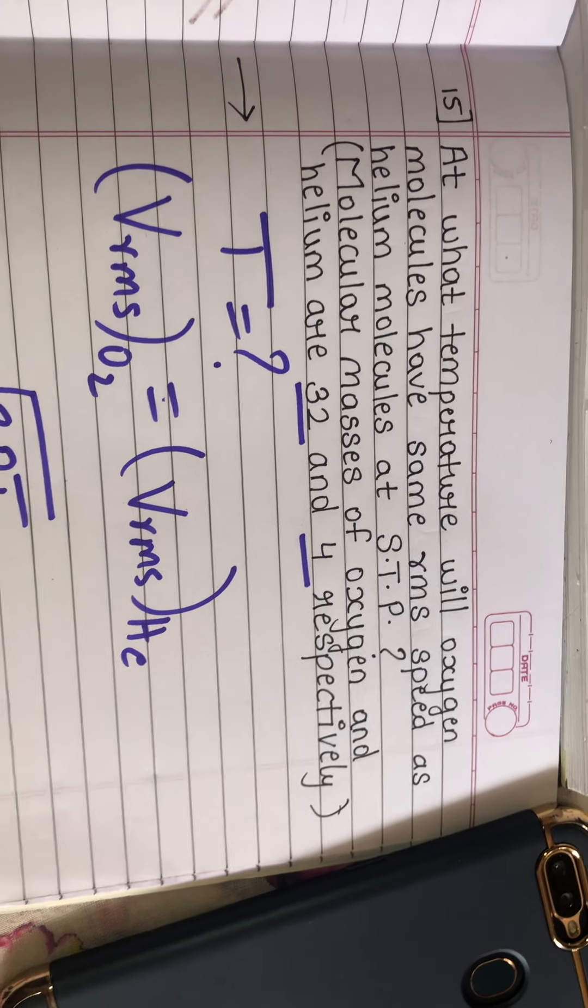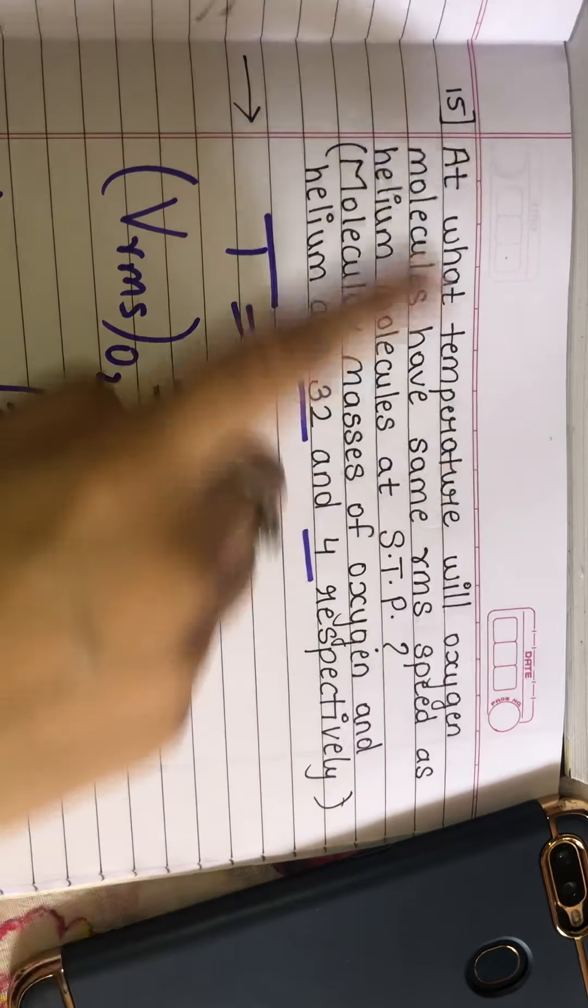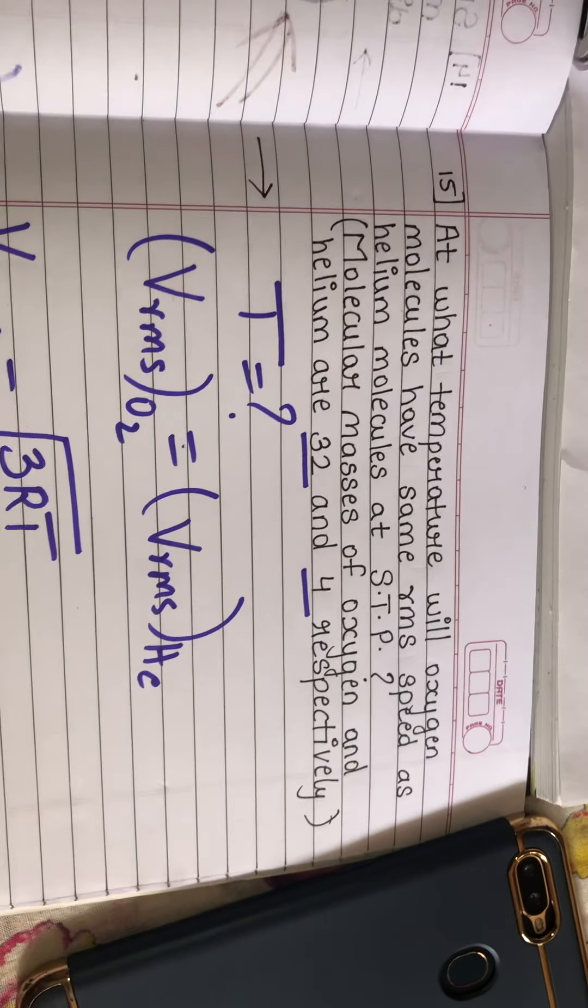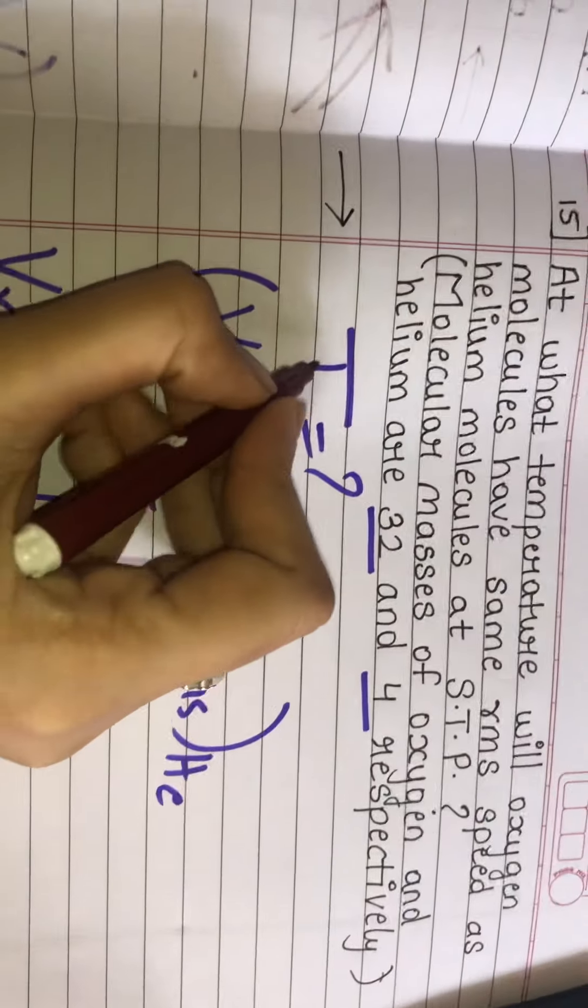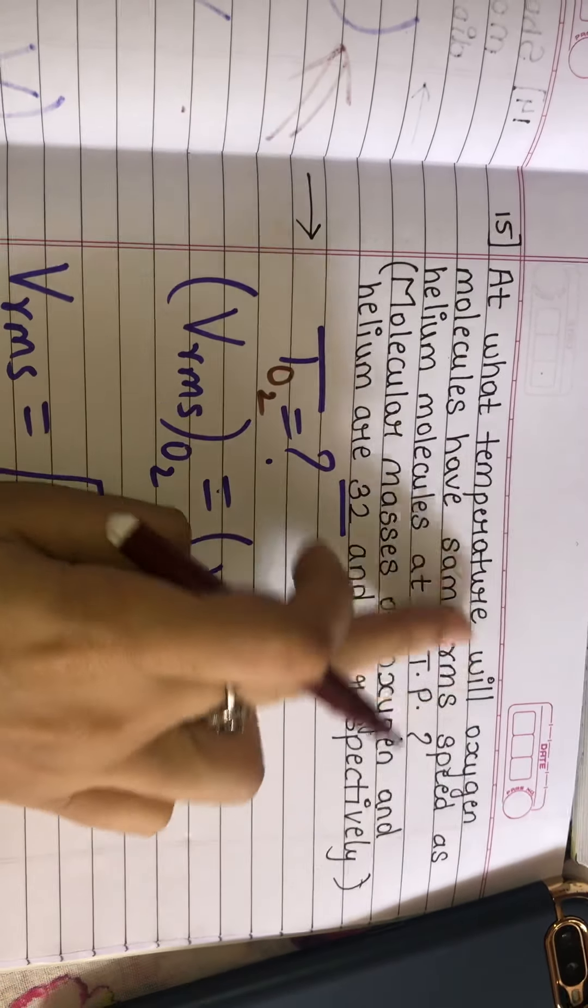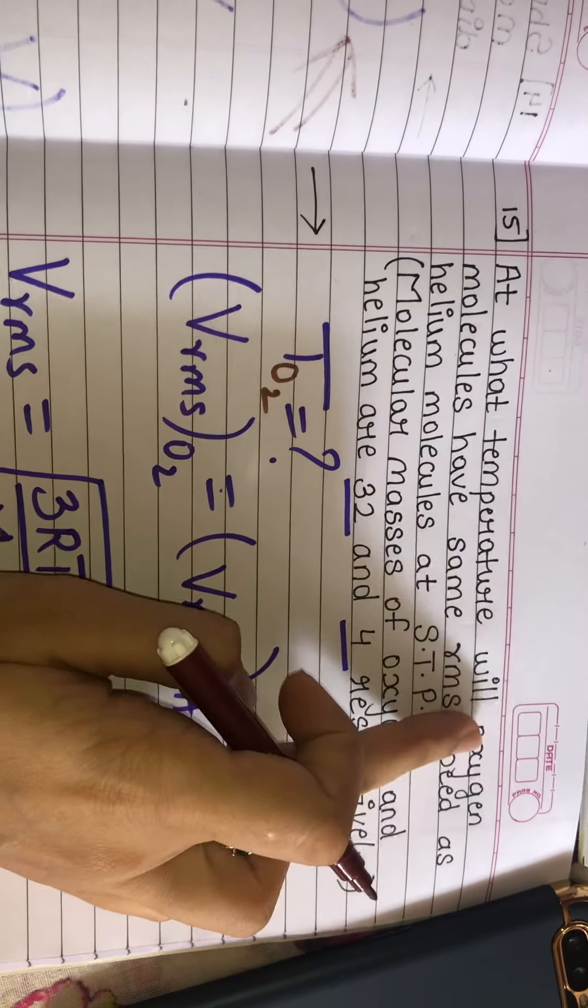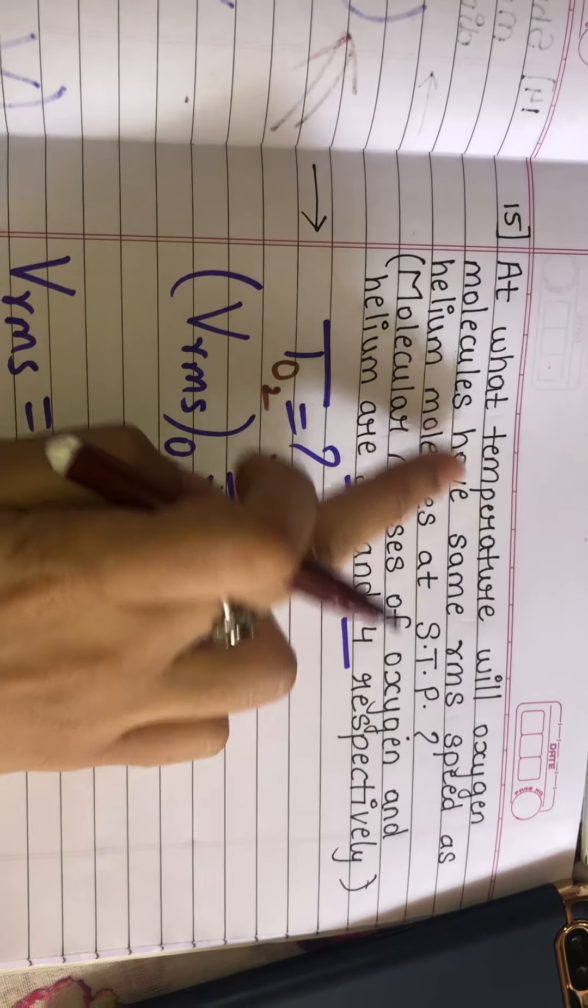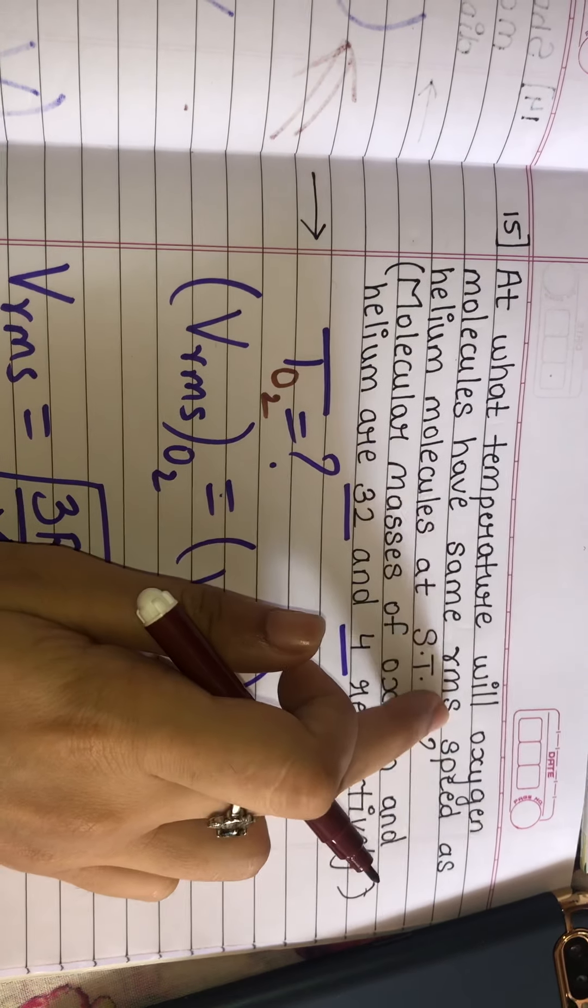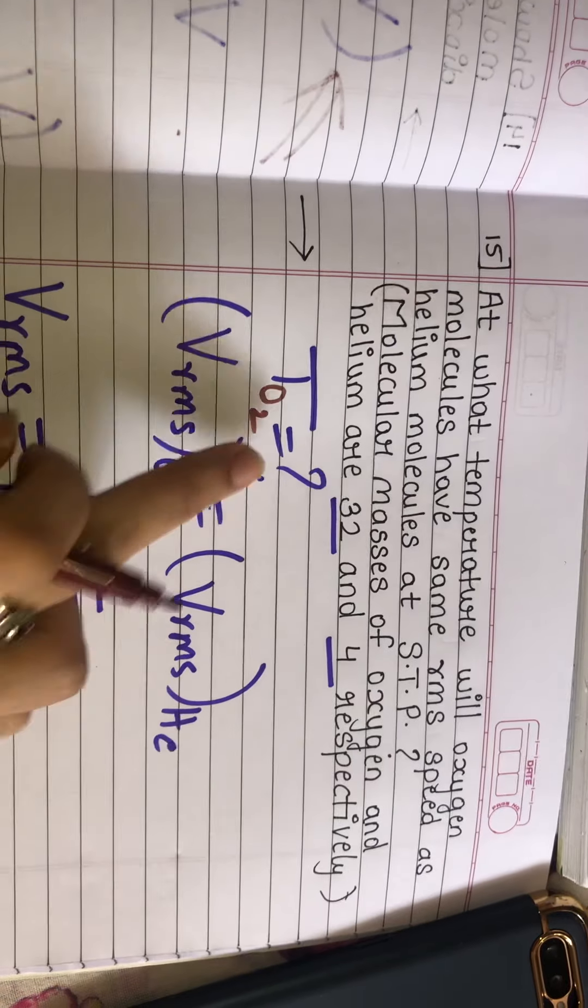Starting with numerical number 15: At what temperature will oxygen molecules have the same root mean square speed as helium molecules? The temperature is asked for oxygen molecules, and the condition involves the RMS speed of oxygen equaling the RMS speed of helium.